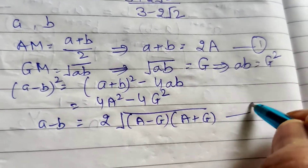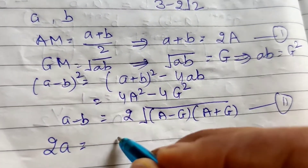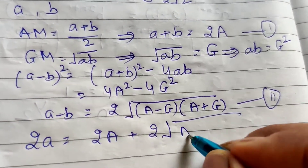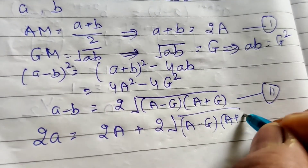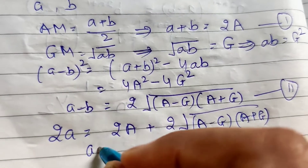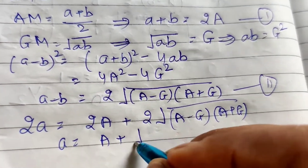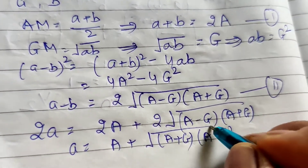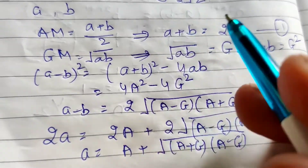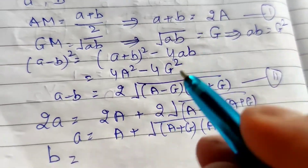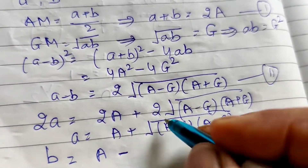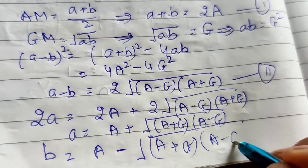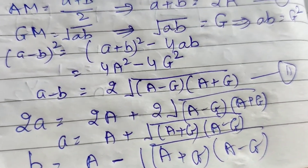Adding equations 1 and 2: 2a = 2A + 2·root((A-G)(A+G)), so a equals A + under root (A+G)(A-G). Putting the value of a back, b equals A minus under root (A+G)(A-G). This is exactly what we needed to prove — the two numbers are A plus or minus root((A+G)(A-G)).